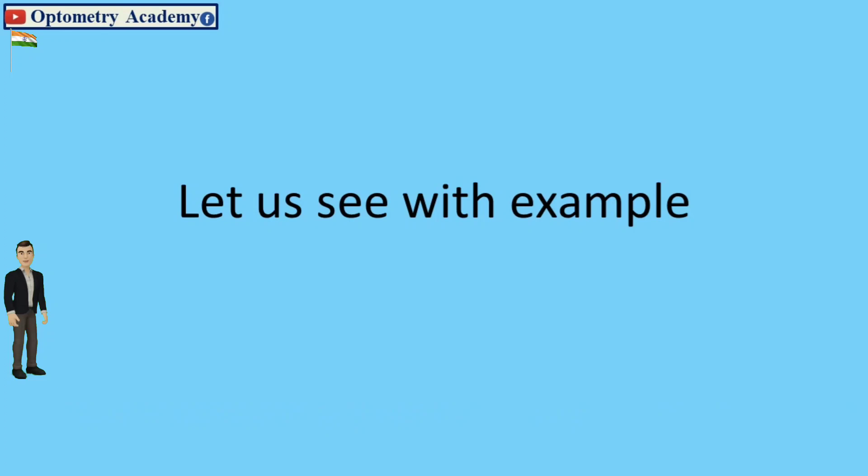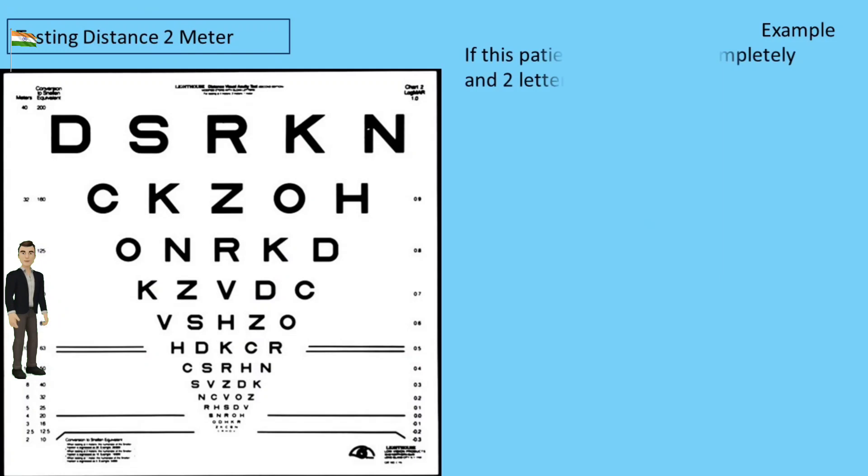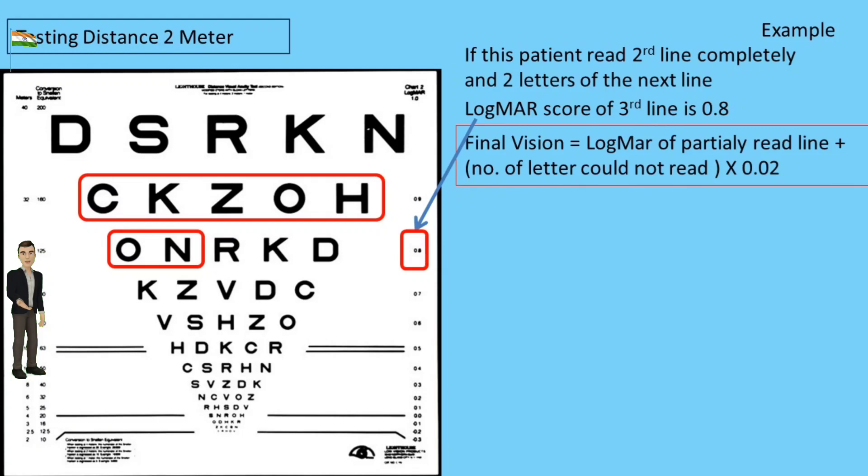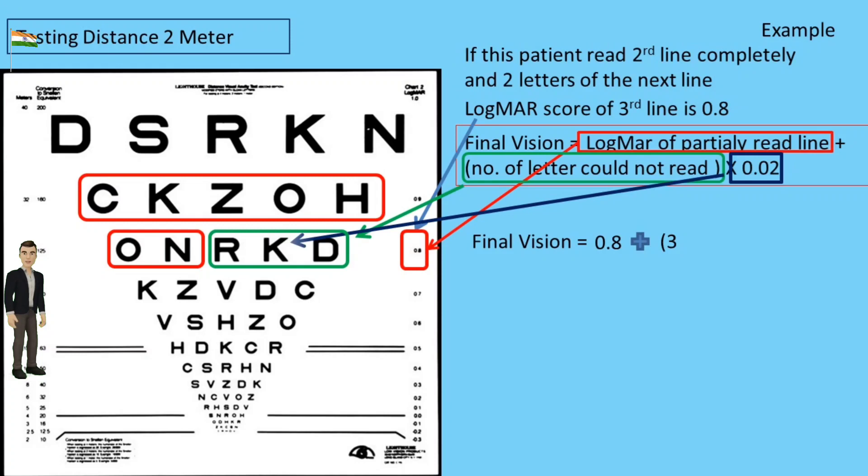Let us see with example. Testing distance 2 meters: if this patient read second line completely and two letters of the next line, LogMAR score of third line is 0.8. Final vision equals LogMAR of partially read line plus number of letters could not read multiplied by 0.02. Final vision equals 0.8 plus 3 into 0.02. Final vision equals 0.86 LogMAR.